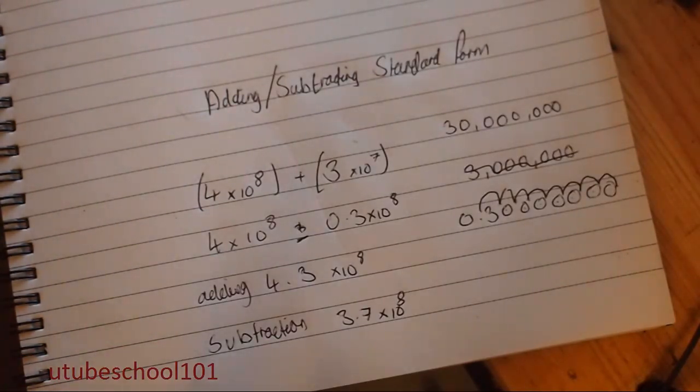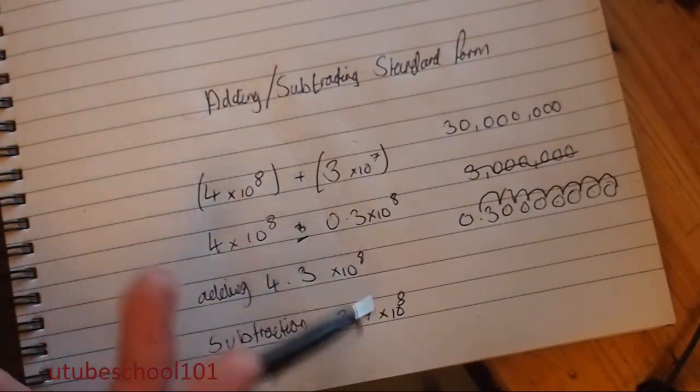However, if you do the multiplying method, where the powers do change, if you don't know what I'm talking about, just forget I'm saying this, because you would have to watch the previous video. Because if you multiply ten and ten, you get a hundred. You get one followed by two zeros. The power of will add. So remember when you're adding and subtracting, not to change the power of.